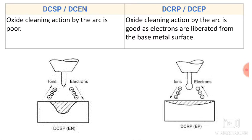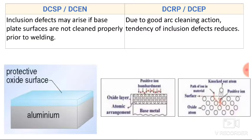In reverse polarity, oxide cleaning action by the arc is good as the electrons are liberated from the base metal. In reverse polarity, the electrons are liberated from the surface of the base plate and hence the oxide cleaning action is good. In straight polarity, as electrons move from electrode to the work piece, we do not get a cleaning action.